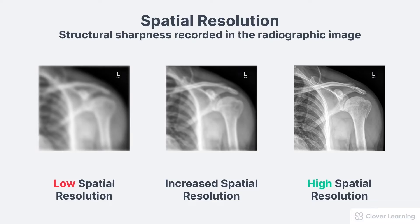It's important to produce radiographic images with excellent spatial resolution. In this set of images, there is a fracture of the greater tuberosity, but it is only visible in the image with the highest spatial resolution. That's why the operator must understand how to produce images with the highest spatial resolution.